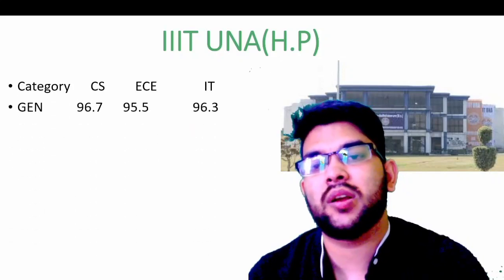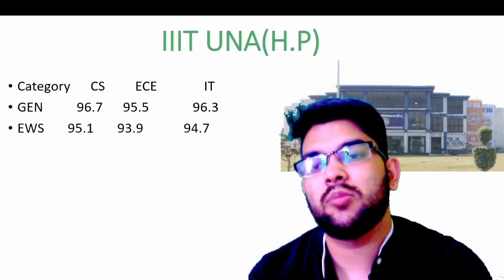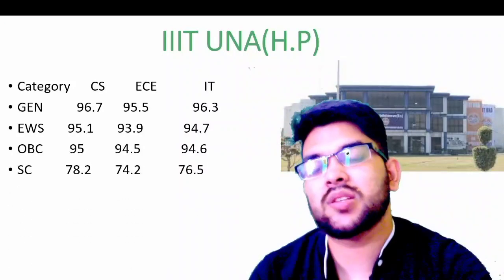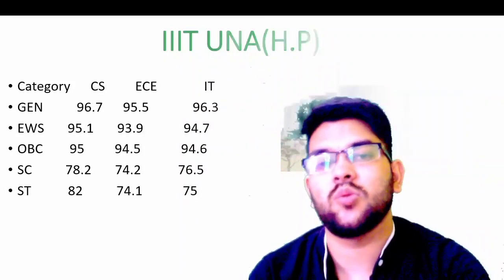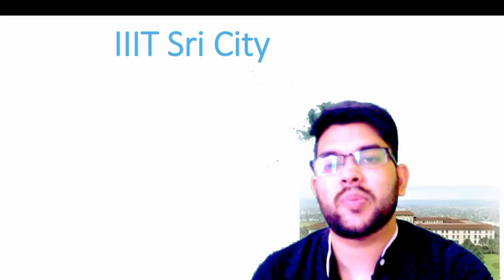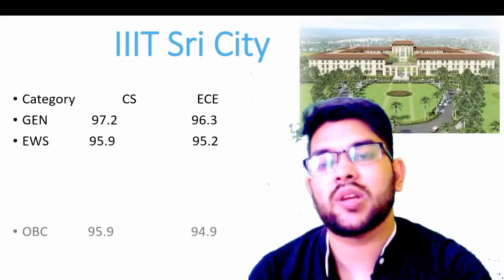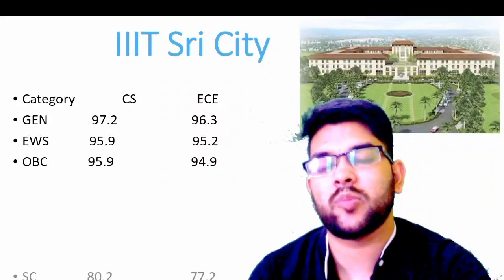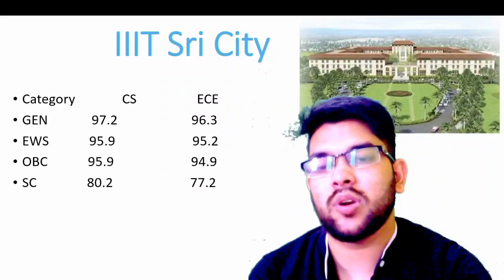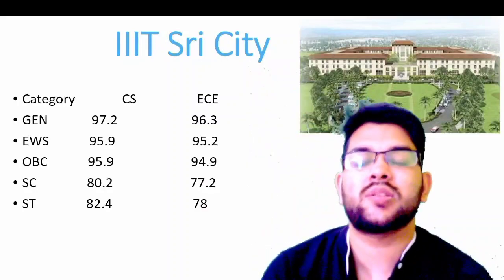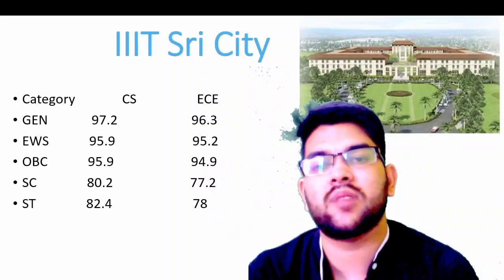For IIIT Una: General — 96.7. EWS — 95.1. OBC — 95. SC — 78.2. ST — 82. For IIIT Sri City: General — CS 97.2. EWS — 95.9. OBC — 95.9. SC — not mentioned. ST — 80.2. For ST: 82.4 percentile. For EC, check sidewise.